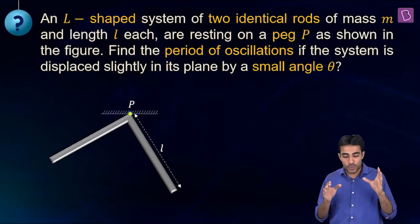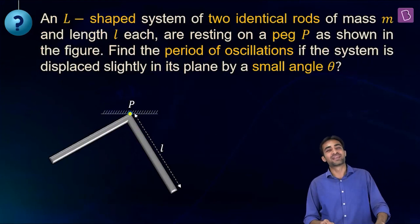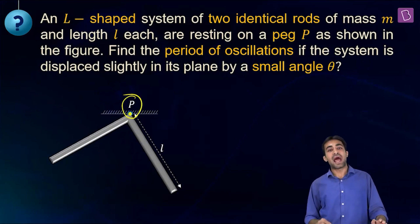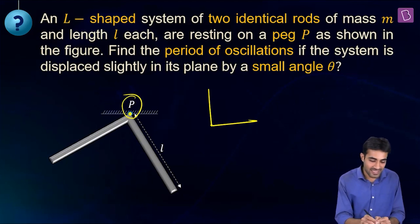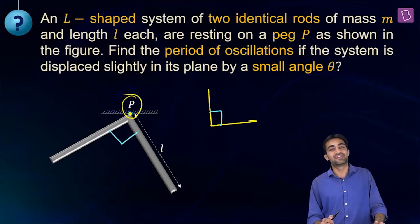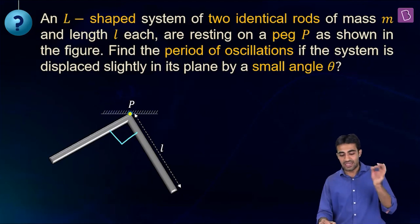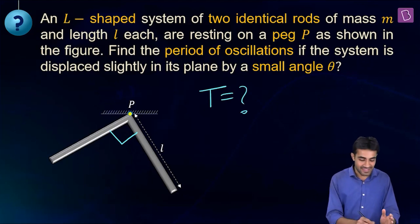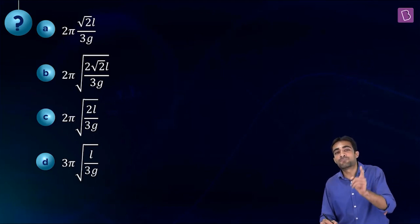An L-shaped system of two identical rods, each of mass m and length L, is resting on a peg P through the ends of the rods. The two rods are perpendicular (90° angle). We need to find the time period of oscillation when displaced slightly by a small angle θ.